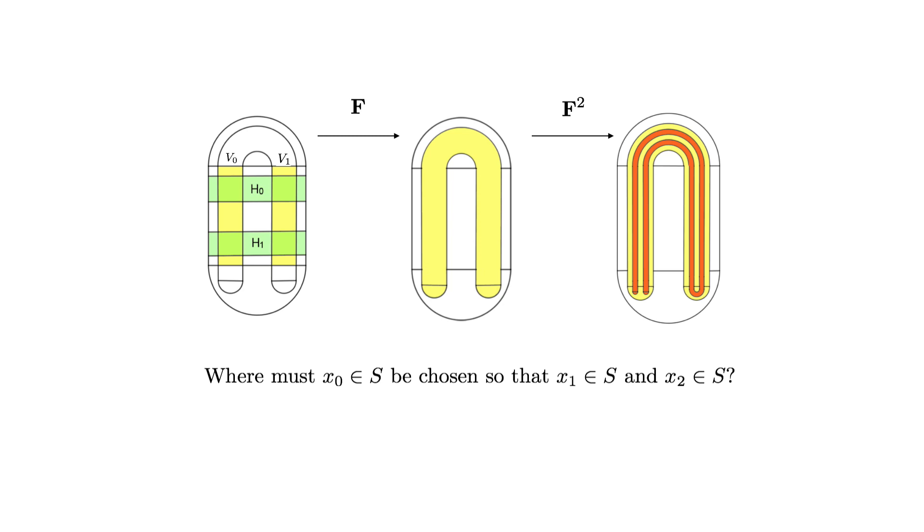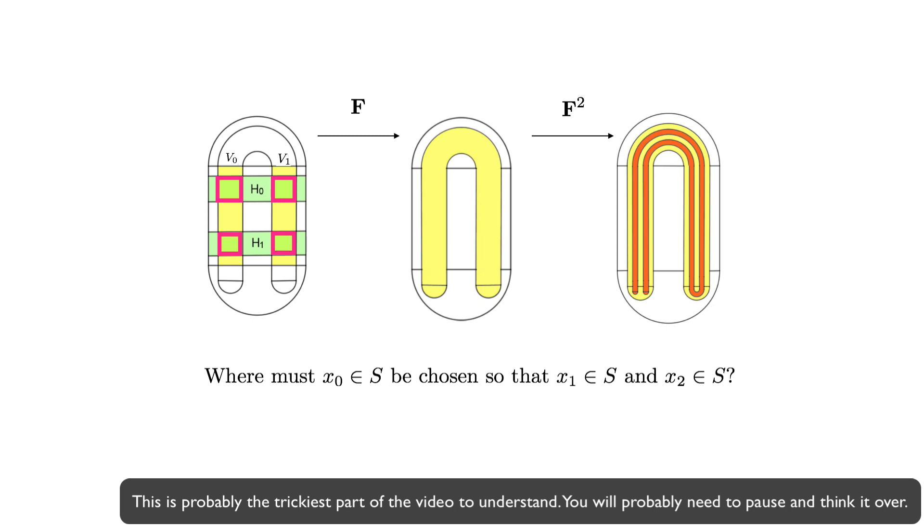The middle vertical section and the ends of the two vertical strips near the cap will then lie outside the square. So, in order to guarantee that the point x0 is mapped to a point x2 in the square after two iterations of f, you must ensure that x0 lies within the intersection of the green and yellow regions.